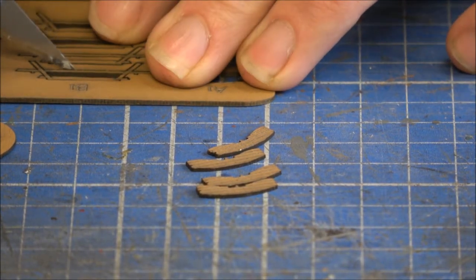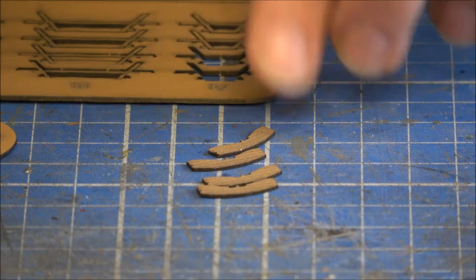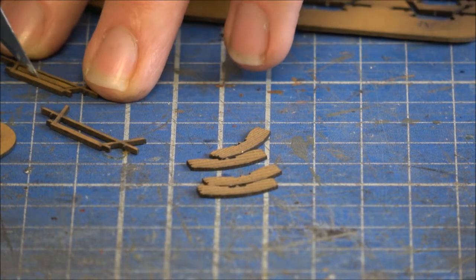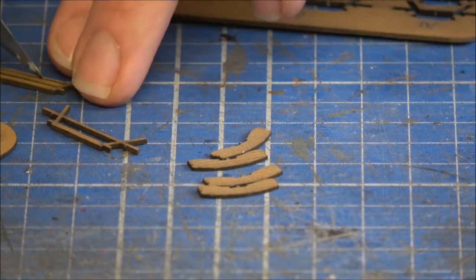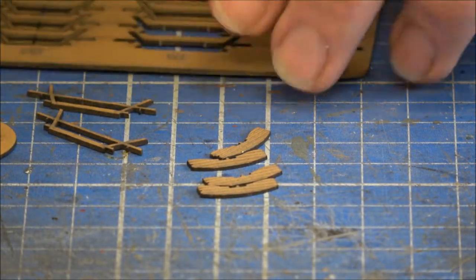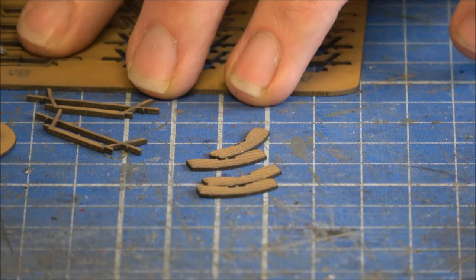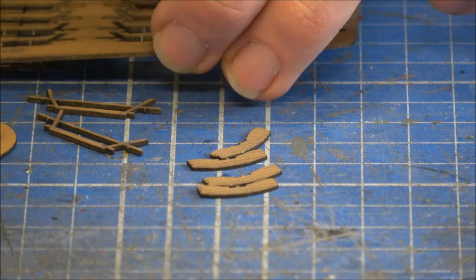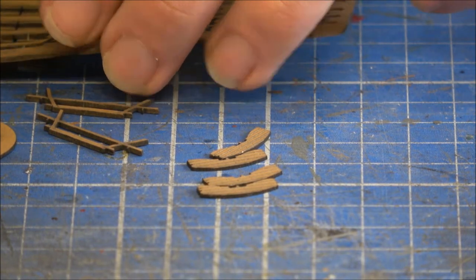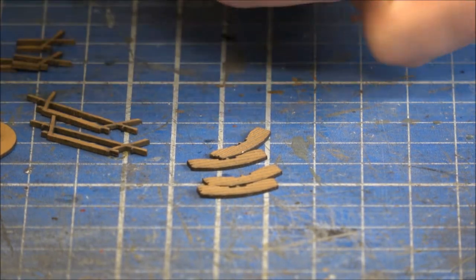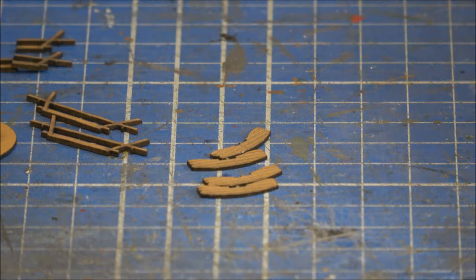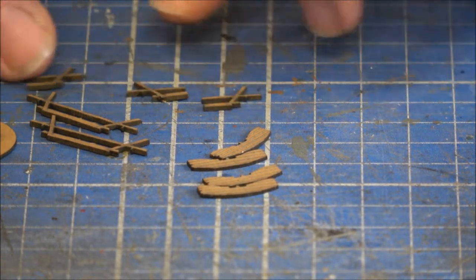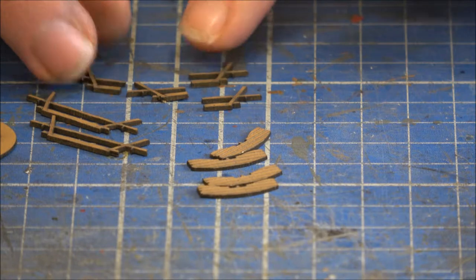So we've got two long pieces for each one, which are those ones there. Let's take the middle out of that one. And then there's four of these little split ones which make up the other sides. So these will obviously make up a slightly different arrangement on it.